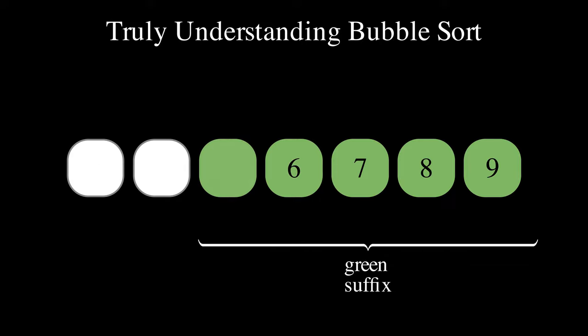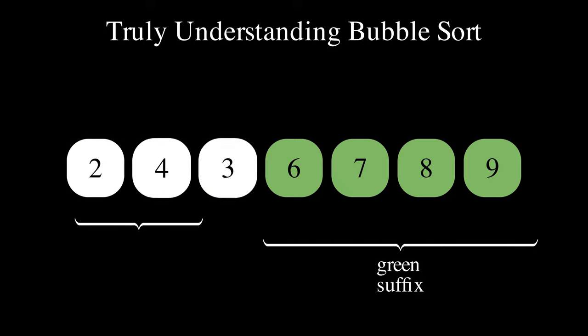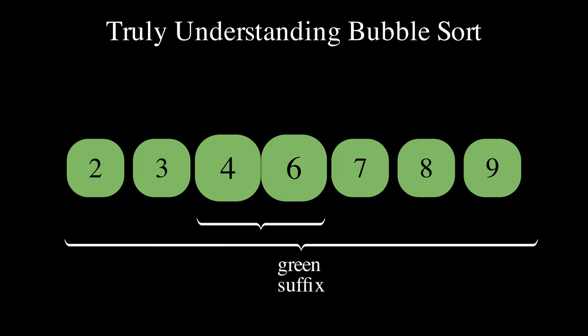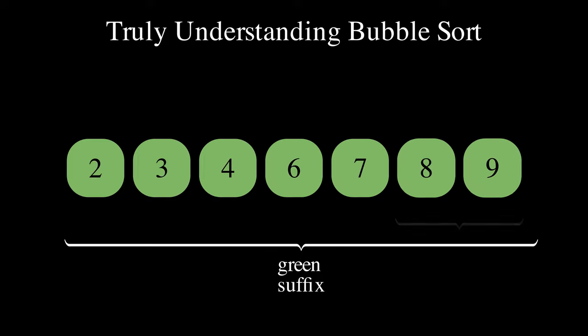As the green segment increases in size by at least one element with each pass, it will encompass all elements after at most as many passes as there are elements in the array. After the green segment encompasses the entire array, the following pass will make no swaps, and the algorithm will therefore terminate at this point.